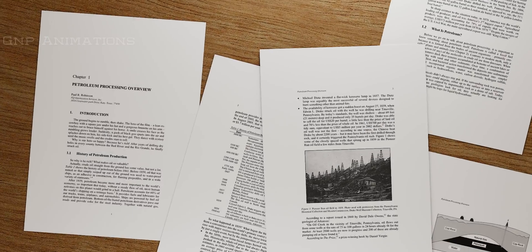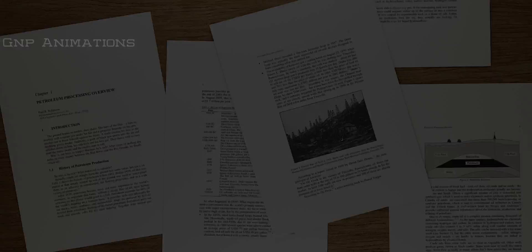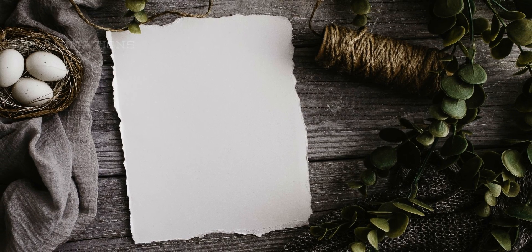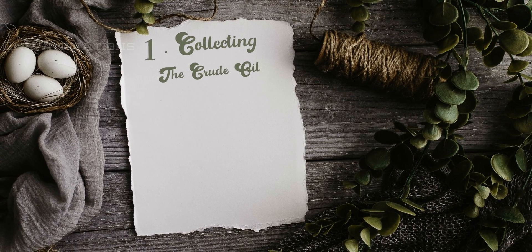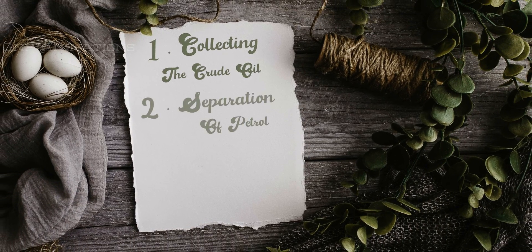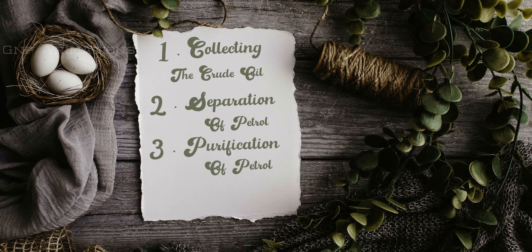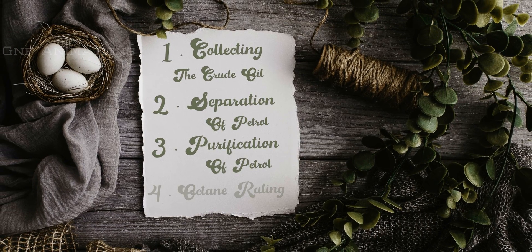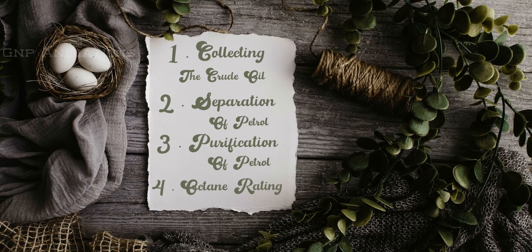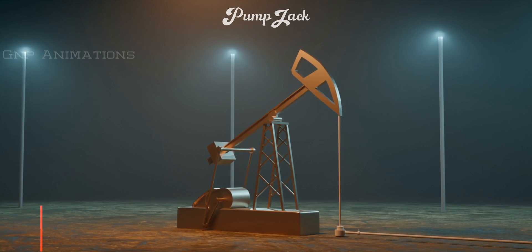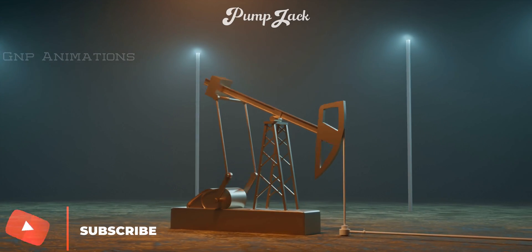There are many steps involved in the manufacturing of petrol, but in this video we are simply going to see four steps: Step 1, collecting the crude oil; Step 2, separating the petrol; Step 3, purification of petrol; Step 4, octane rating. The first step in the manufacture of petrol is to collect the crude oil.